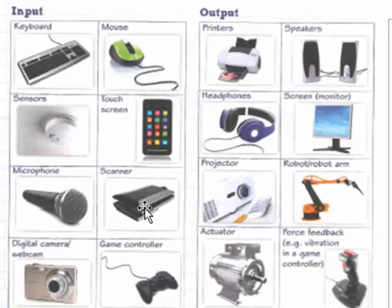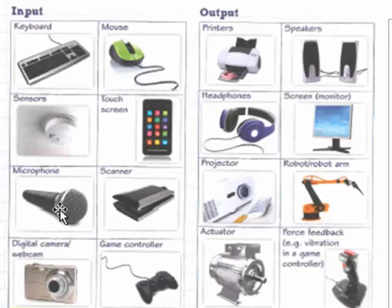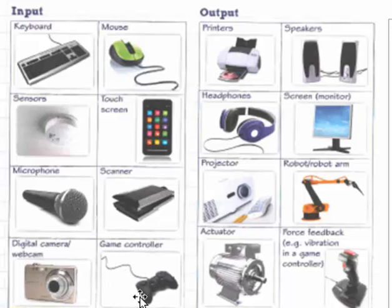Scanner is to turn hard copy, print copy information into digital information. They can be pictures and they can also be editable text. Microphone turns your voice into digitized signals so that you can record them, turn them into MP3 and listen to them. Digital cameras capture pictures and send them in. Game controller sends your interactions, your actions into the computer — which could represent firing, moving, jumping, hopping.